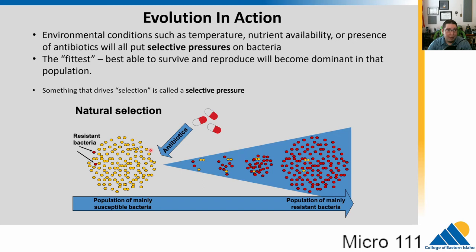If I apply the selective pressure — the antibiotic — it's going to kill almost all of the susceptible organisms. But any resistant individuals will have a better time. They will divide and reproduce much better, while most of the susceptible ones got killed. These resistant ones are fine because they have the mutation allowing resistance. Gradually, over a few generations, the majority of the population is now resistant. That's evolution in action right there.